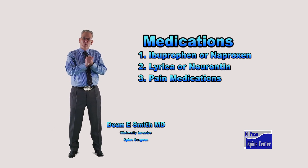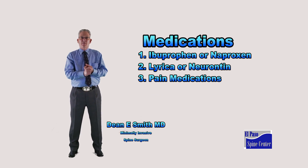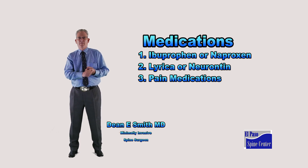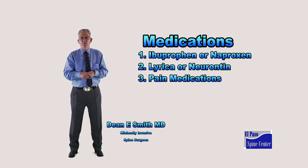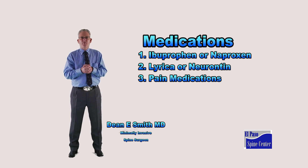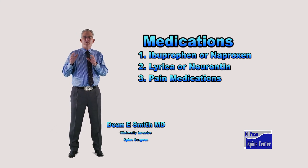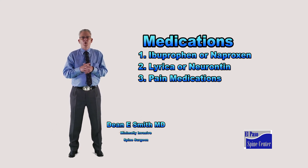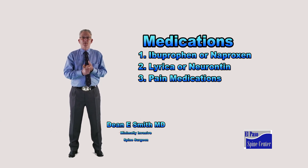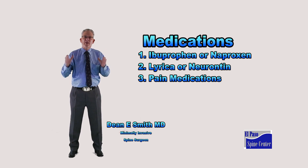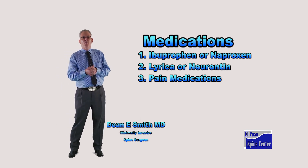The medications are divided into three different types. It's a degenerative condition, so we use an anti-inflammatory medication — an anti-arthritis medication such as ibuprofen or naproxen. The second type of medication are those that almost function like vitamins for the nerves, such as Neurontin or Lyrica. These medications are typically taken at night, and they have the added benefit of helping the patient sleep.